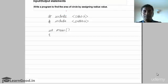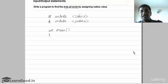We'll write another program to find the area of a circle by assigning the radius value. The area of a circle is pi r square, where r is the radius. The radius value has to be assigned and then you have to find out the area.